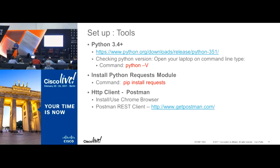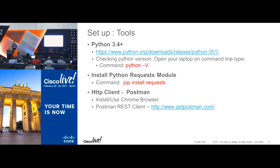Setup tools: the scripts we've written are all in Python 3, so we recommend Python 3.x. If you have Python 2 and can't upgrade, you can run the scripts but may need minor coding changes due to syntax errors. Check your version with Python -V. We also use the HTTP requests module, which allows you to easily make HTTP calls — GET, POST, PUT, or DELETE. Install it through pip install requests, where pip is the package manager for Python.